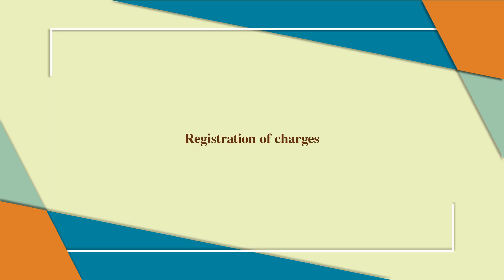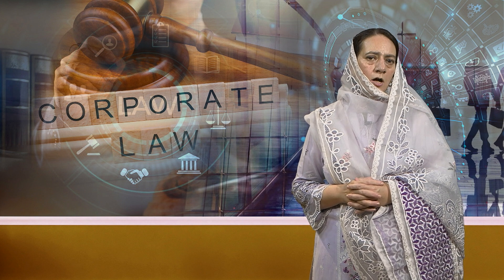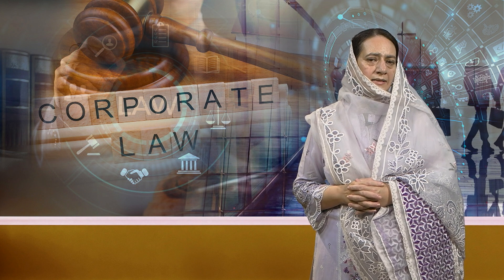Section 77 of the Companies Act 2013 requires the company to file within 30 days of the creation of a charge with the Registrar of Companies complete particulars, together with the instrument creating, evidencing, or modifying the charge or a verified copy thereof in the prescribed manner for registration. Otherwise the charge shall be void and the money secured thereby shall become immediately payable.